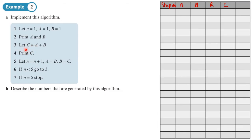There's also an instruction to 'print c' — meaning output or show on screen — so the last column heading will be 'print' to show what gets output. The first instruction says: let n equal one, a equal one, and b equal one. So on step one, n, a, and b all equal one.